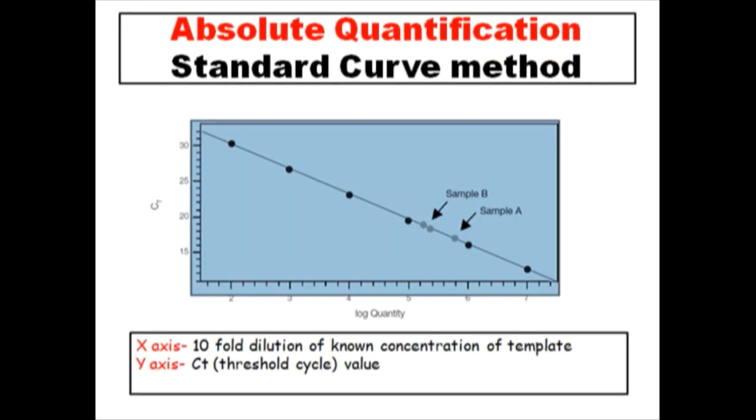Now come to the quantification part. In real-time PCR there are two types of quantification methods: relative quantification and absolute quantification. In this video I will particularly talk about the absolute quantification method.